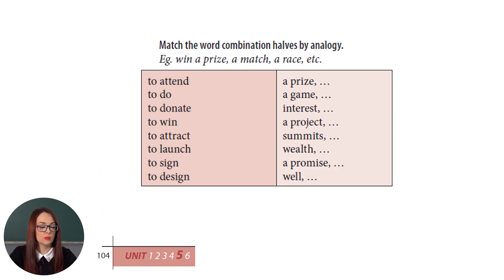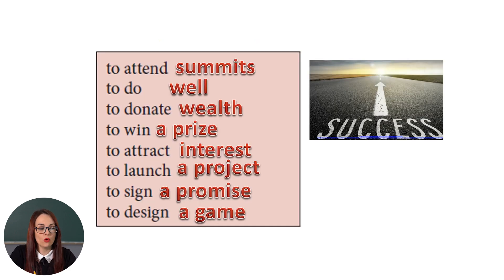Now let us work a little bit with the vocabulary. We have some word combinations and we have to combine them by analogy: win a prize, win a match, win a race. Look at the exercise and complete it. The answers include: to attend summits, to do well, to donate wealth, to win a prize, to attract interest, to launch a project, to sign a promise, to design a game.